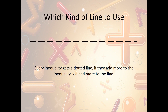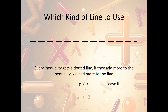The other new aspect is what kind of line to use. Similar to open circle versus closed circle, every inequality gets a dotted or open line by default — notice the little spaces in between. If they add the bar underneath the inequality symbol, then we add to it and make it a solid line. For example, y is less than x — no bar added, so it stays as a dotted line. But x is greater than or equal to 2 — the bar is added, so we make it a solid or closed line.